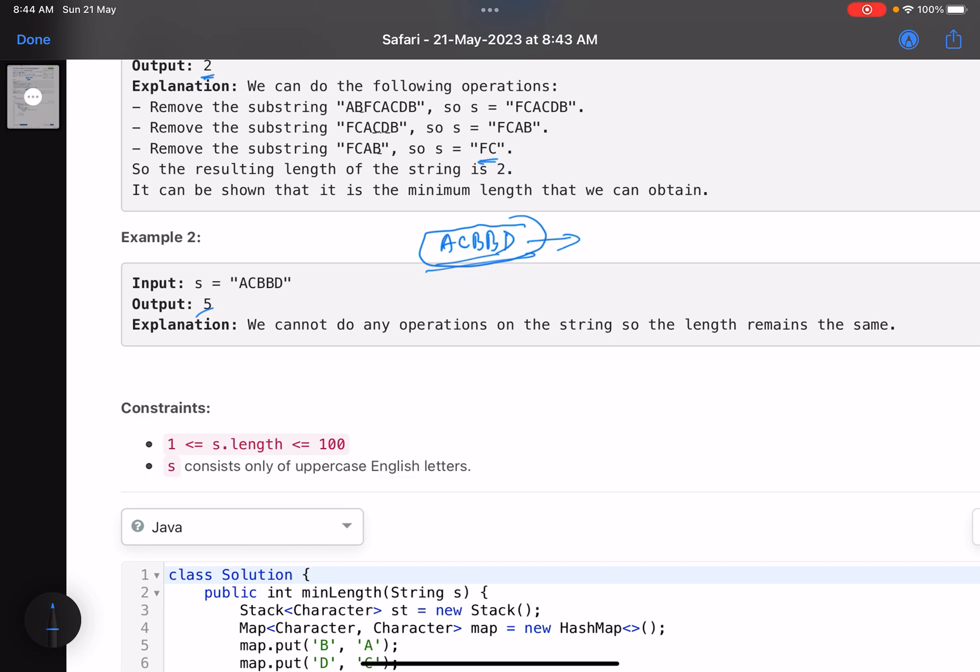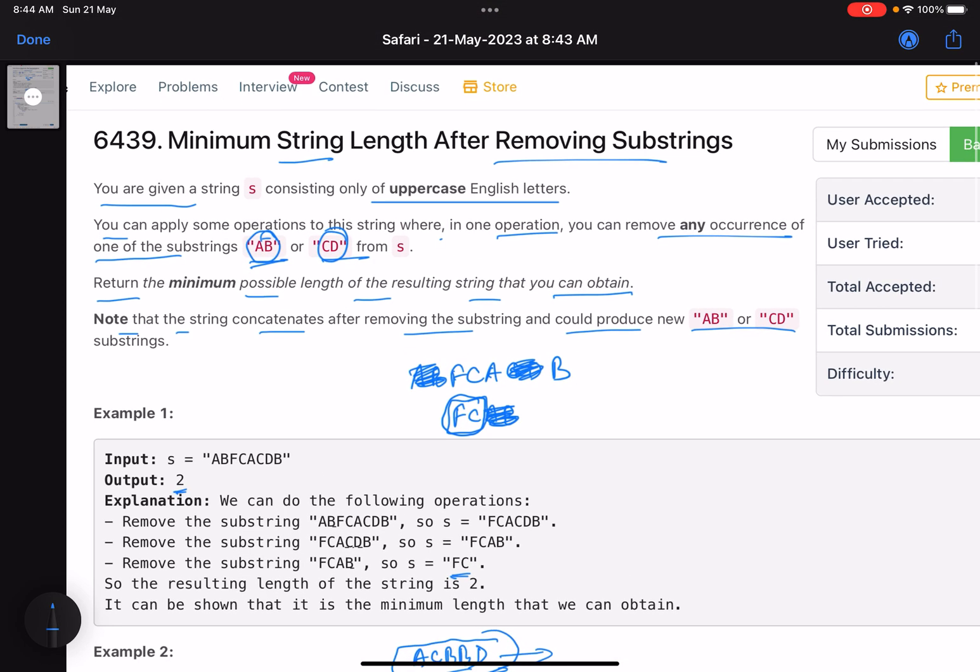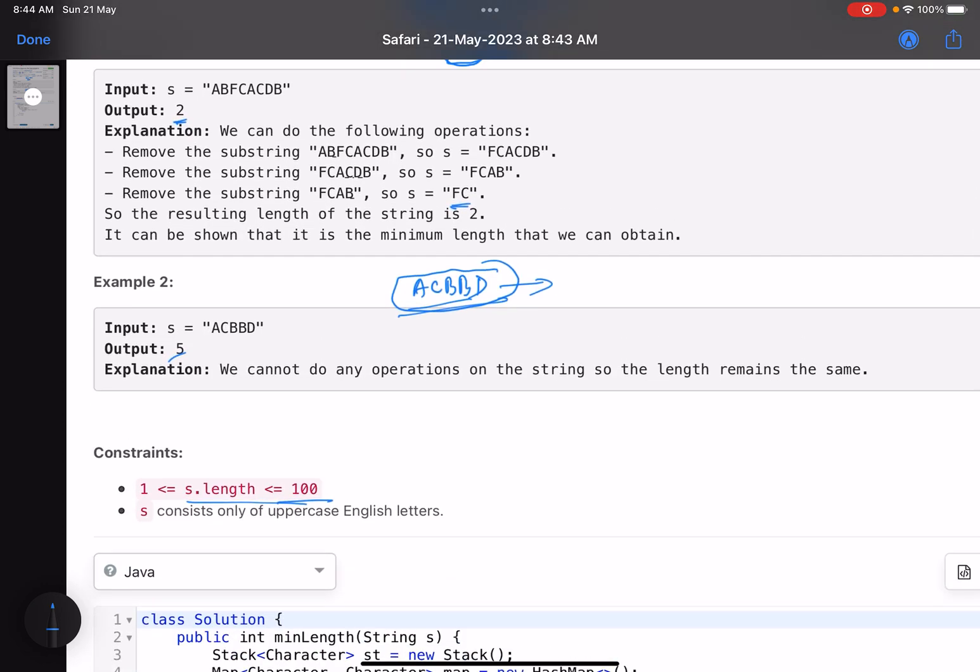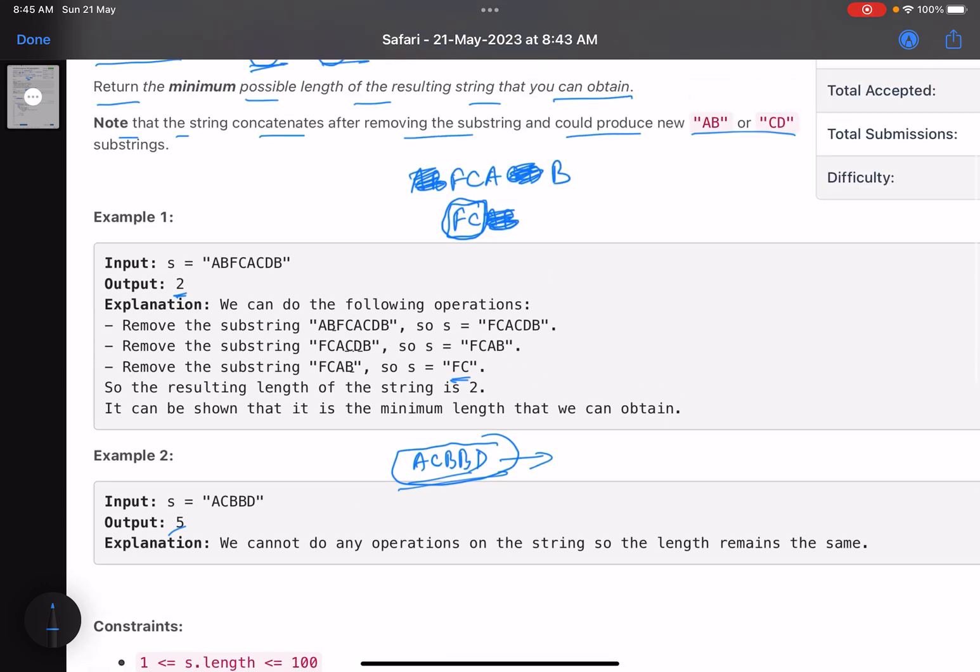Now the constraints are the length of the string can go up to 100, so pretty low constraints. This is a very typical problem of stack. Why does this use stack?